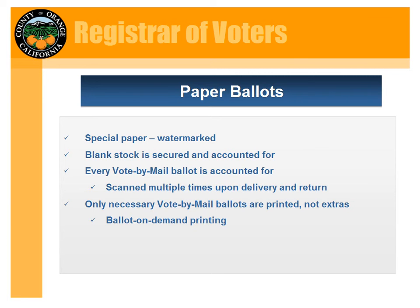Once we print our vote-by-mail ballots, they are scanned upon leaving our office and scanned again when returned, so we know exactly where each ballot is at all times. We also use ballot-on-demand printing — meaning we only print ballots for a specific voter and a specific purpose, with no extras. This ensures no extra ballots are left around that could get into other hands.